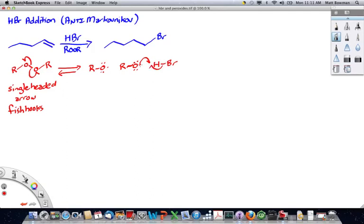It can pull off a hydrogen from that HBr. So the single unpaired electron from the oxygen goes to the hydrogen, and then one electron from the HBr bond goes to meet it,